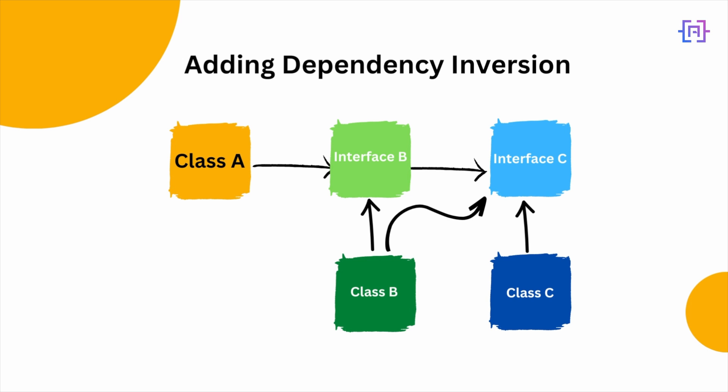Now, what if we introduce dependency inversion? We now have an interface B which is implemented by class B, and similarly we have introduced an interface C and a class C. When writing the code in A we are now using the abstraction, which is interface B, thus creating loose coupling. Both the high-level class A and the low-level class B depend on the same interface. At runtime the concrete implementation of class B is used, but different implementations of interface B can now be used, making the code loosely coupled and much easier to test.